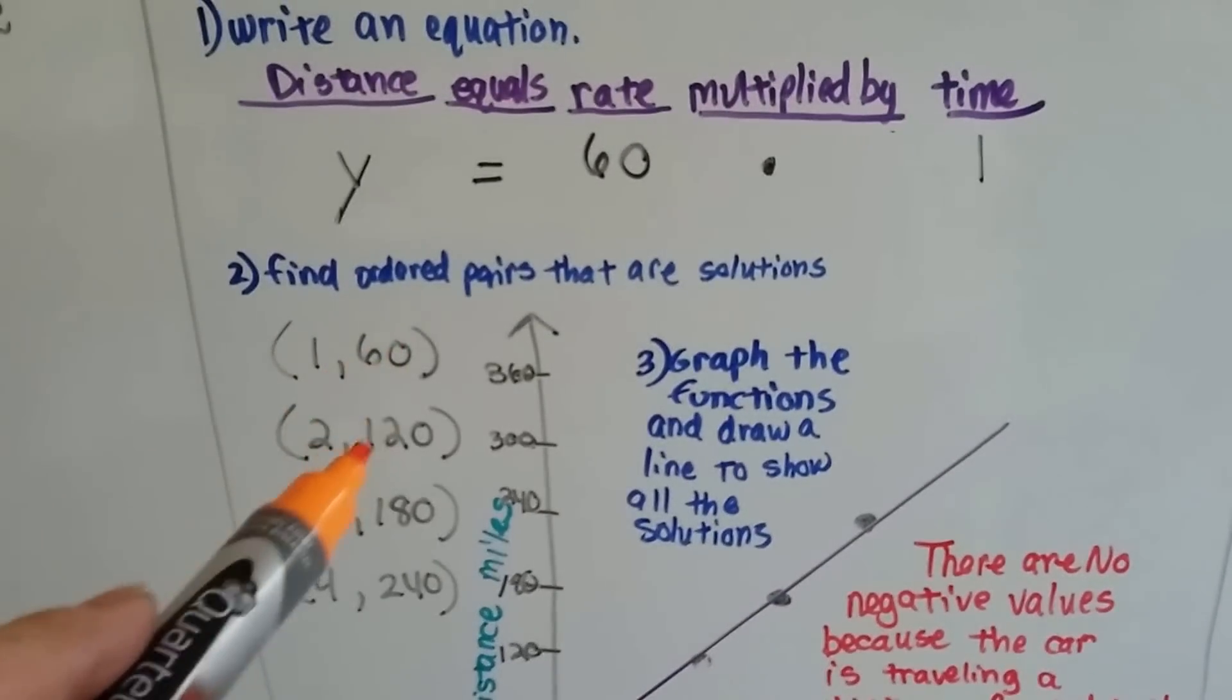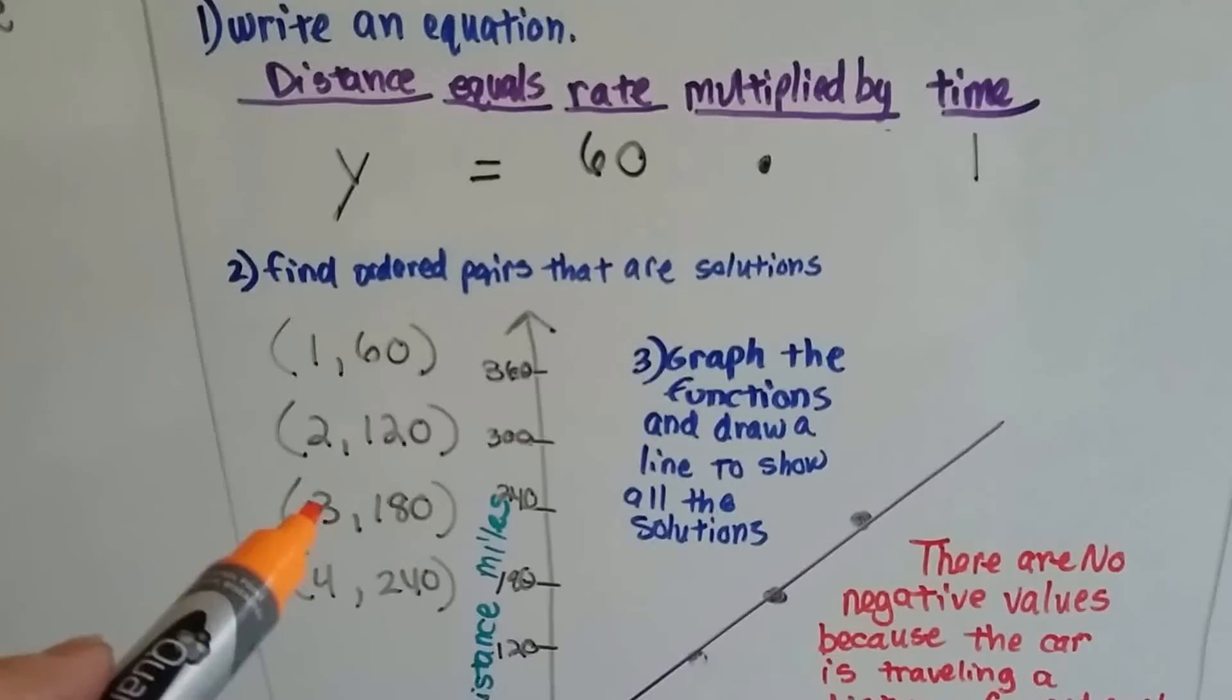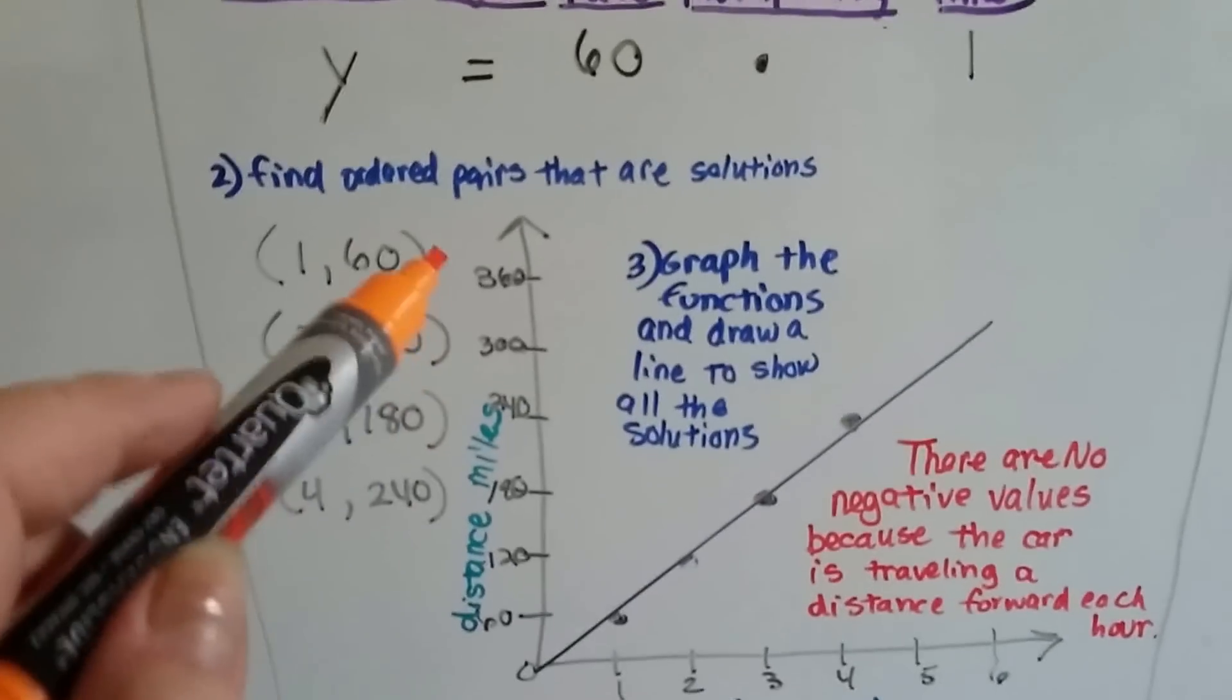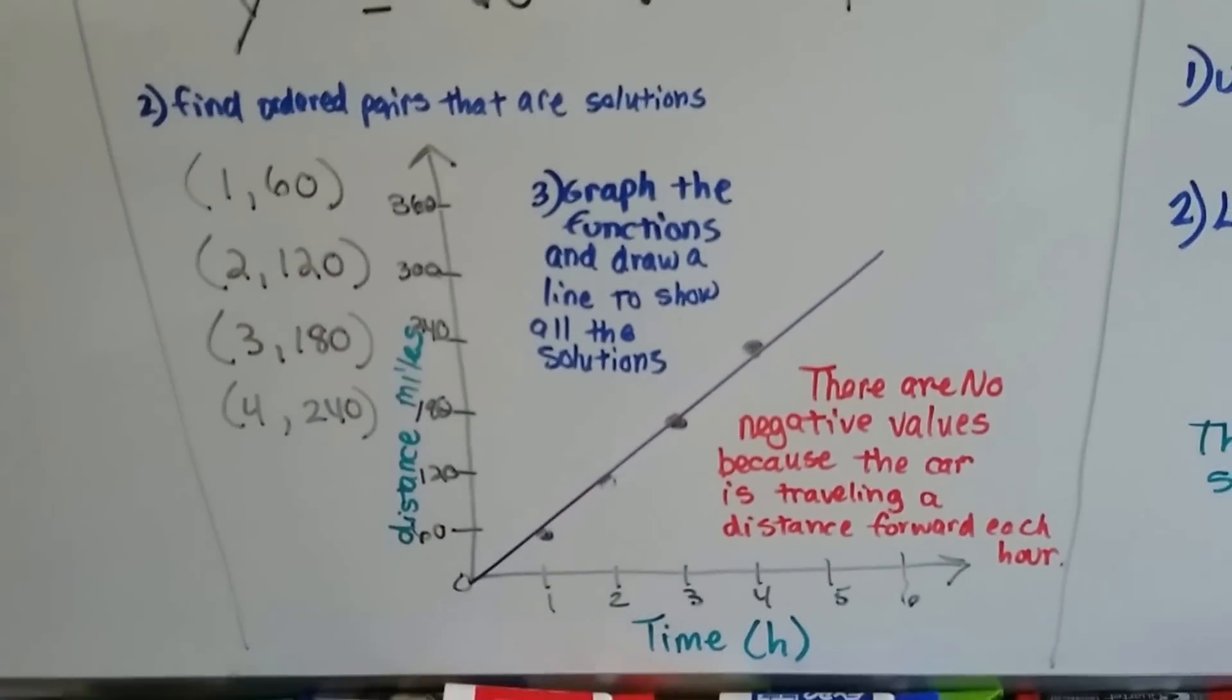So we find ordered pairs that are solutions. If it goes one hour, it goes 60 miles. Two hours, it'll go 120 miles, and so on. Then we graph the functions and draw a line to show all the solutions.